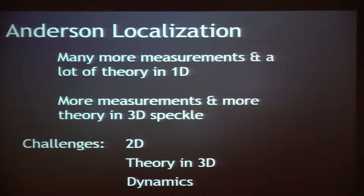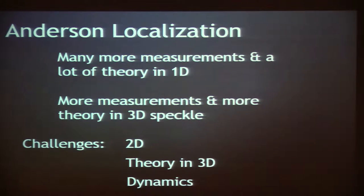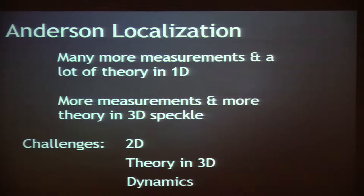There's a lot more measurements and tons of theory papers on localization of 1D with ultracold atoms in speckle and quasiperiodic lattices. There's more measurements from Inguscio's group and a lot of theory in 3D speckle. The challenges are that no one's really been able to do 2D Anderson localization yet — no one's really observed that — and there are probably some good reasons for that. The best guess is that the speckle just traps atoms in 2D, and the localization lengths are much bigger than the gas in any calculation you do, so it would be difficult to see.